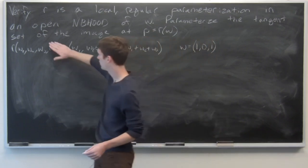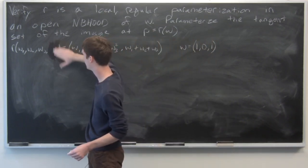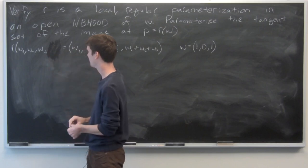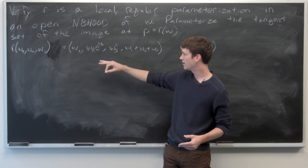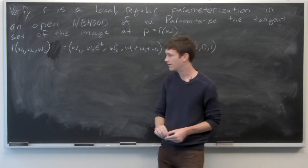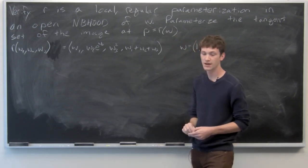For some reason I wrote w4, but there's really only 3, so we'll just leave it like that. And we see that w is given as 1, 0, 1.